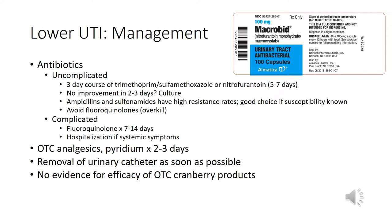Management for an uncomplicated lower urinary tract infection includes a three-day course of Bactrim or a five- to seven-day course of nitrofurantoin or Macrobid. If there's no improvement in two to three days, culture is recommended. Ampicillin and sulfonamides have higher resistance rates, so they're a good choice only if susceptibility is known. For uncomplicated lower UTIs, avoid fluoroquinolones — reserve those for when necessary.